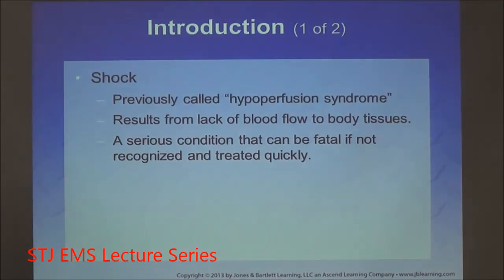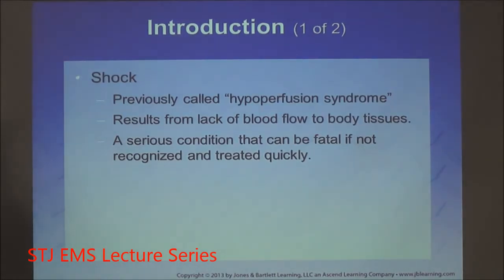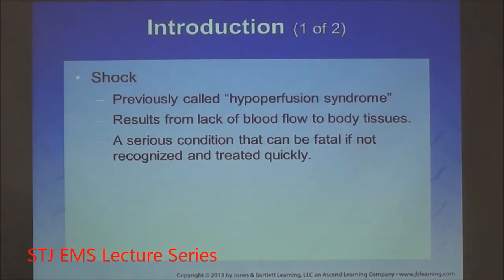Oxygen is used with sugar in the process known as the Krebs cycle to produce ATP. Without oxygen, the body can still produce ATP energy, but it only burns sugar and is very ineffective — only two to four molecules of ATP for anaerobic metabolism, as opposed to 32 molecules for aerobic metabolism.